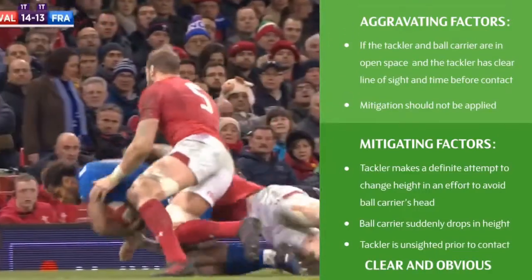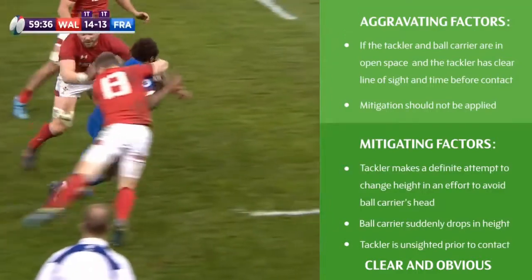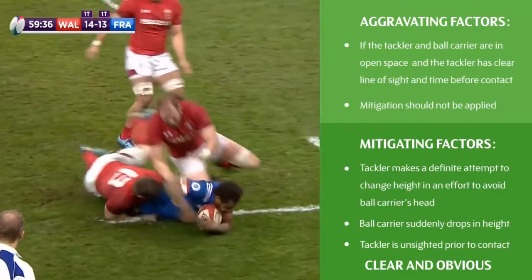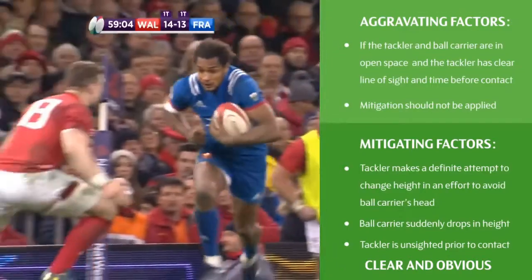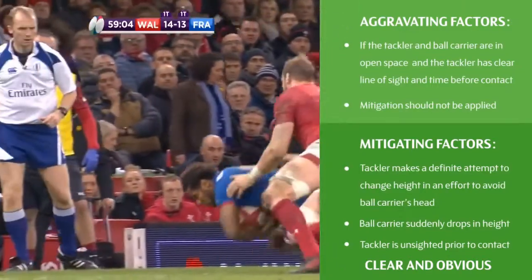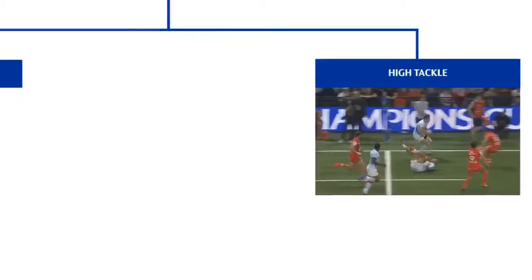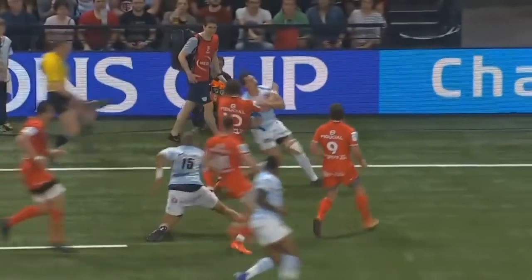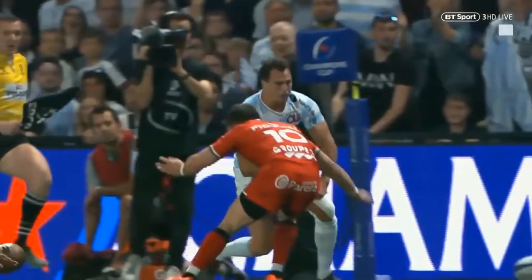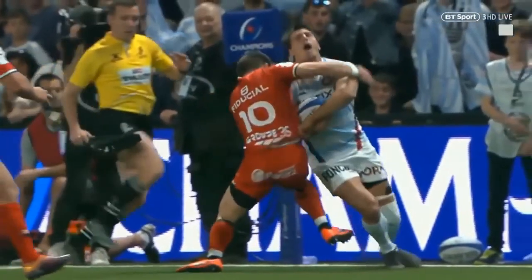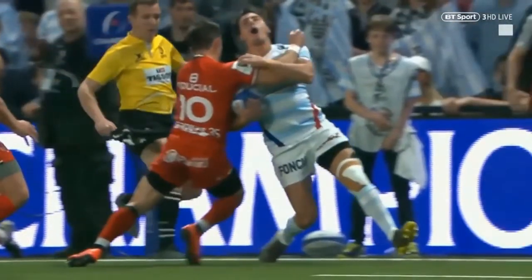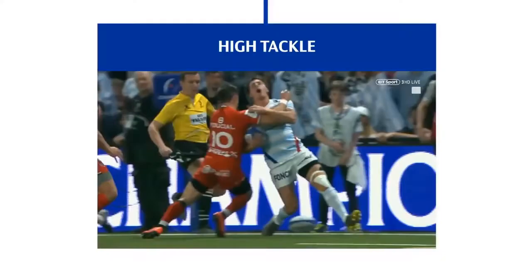Had the referee deemed there to be clear and obvious mitigation, the decision would be to play on. This is an example of a seat belt tackle and completes the set of possible high tackle scenarios. Let's look at one more high tackle example to revisit the process from start to finish. Here we see a high tackle because the tackler's arm is not in a sling position, nor is it behind the tackler's body at impact, so we exclude a shoulder charge and apply the four questions.